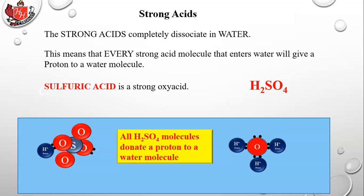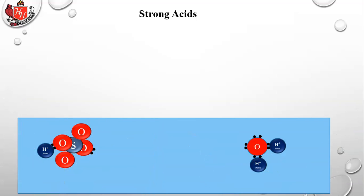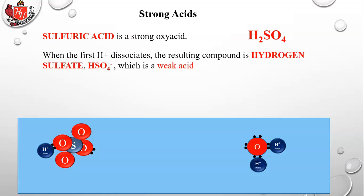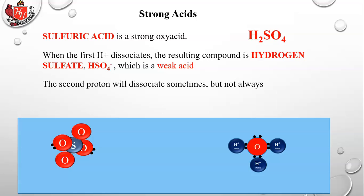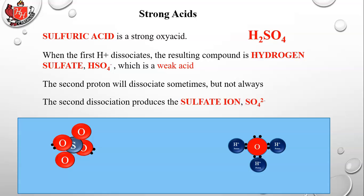All H2SO4 molecules donate a first proton. Sulfuric acid is a strong oxy acid, so when the first H+ dissociates, the resulting compound is hydrogen sulfate, which is a weak acid. The second proton will only sometimes dissociate to a different water molecule. That second dissociation produces the sulfate ion SO4²⁻. This is where molecular ions like sulfate, phosphate, and nitrate generally come from — dissociated acid molecules where hydrogen has left, leaving behind a molecular ion with a negative charge.